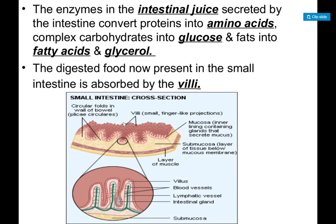After that, there is our intestinal juice, which is secreted by our small intestine. It converts proteins into amino acids, carbohydrates into glucose, and fats into fatty acids and glycerol. These are the simplest forms of our food. When our food has broken down to this level, we say that our food is digested, and then we can absorb those particles.